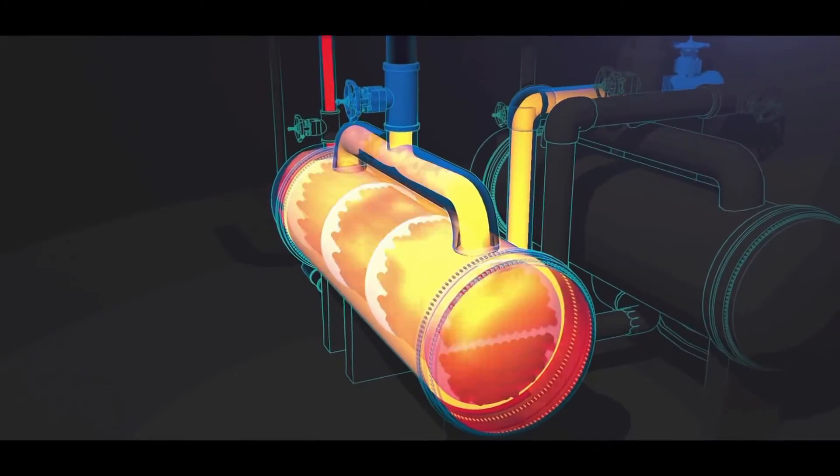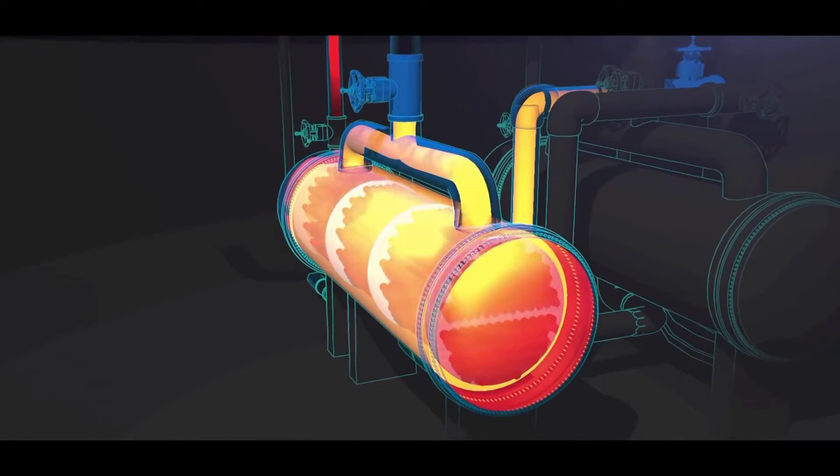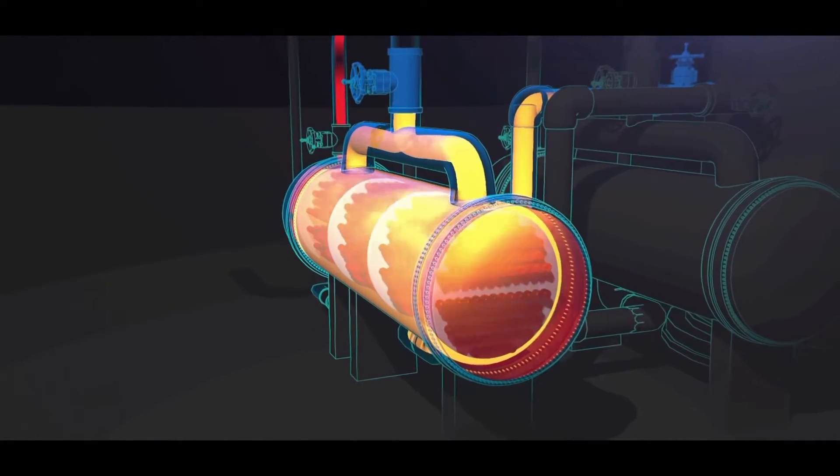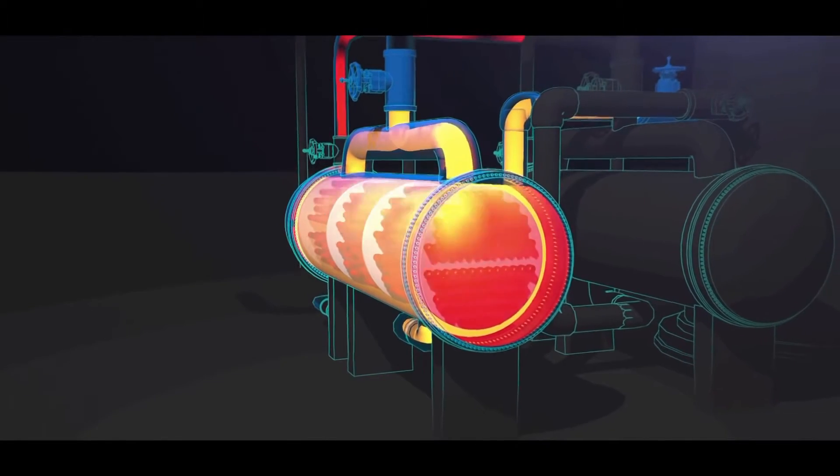This caused pressure to dramatically increase until the reboiler ruptured. When identifying overpressure protection requirements for heat exchangers, engineers should evaluate the scenario that caused the Williams explosion. The hot side of the heat exchanger was operated while the cold side was blocked in.